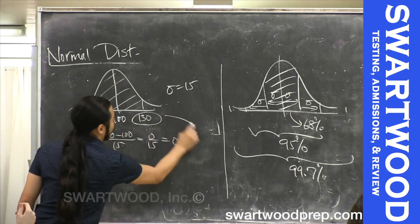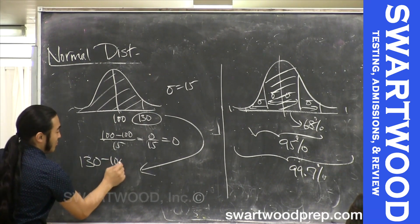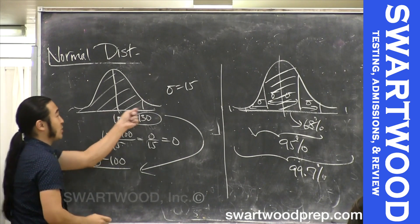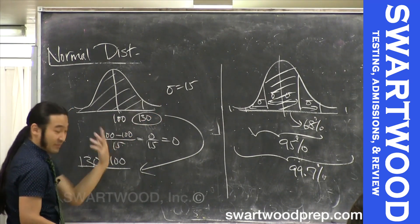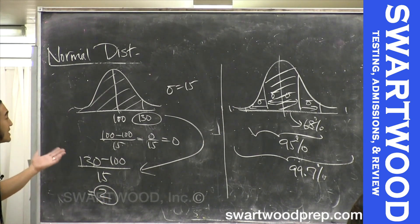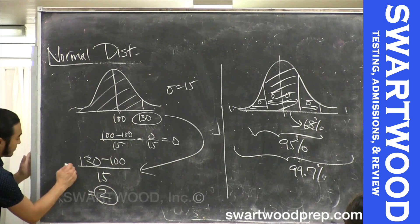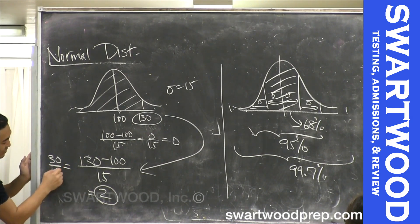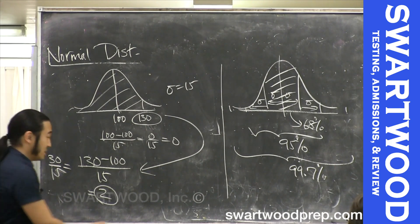What about 130? You can eyeball it as two. It's literally your score minus the mean — you're 30 points away from the mean. But each standard deviation is worth 15, so you divide by 15, and that gets you two. So it's telling you two standard deviations above the mean. This is what you call the z-score.